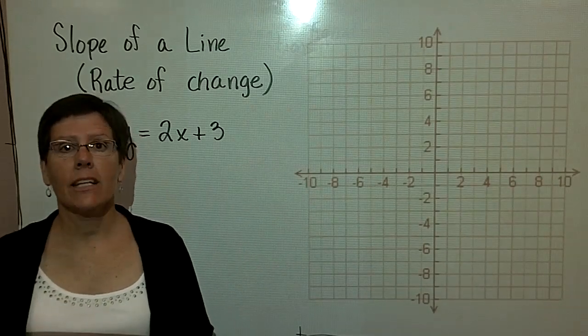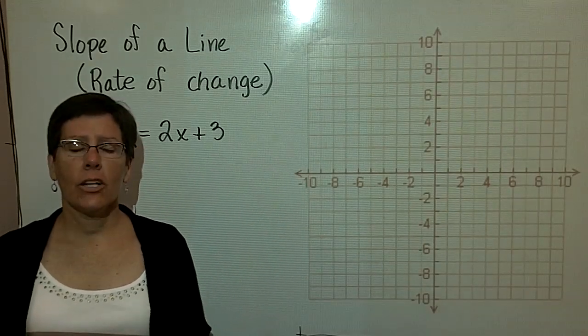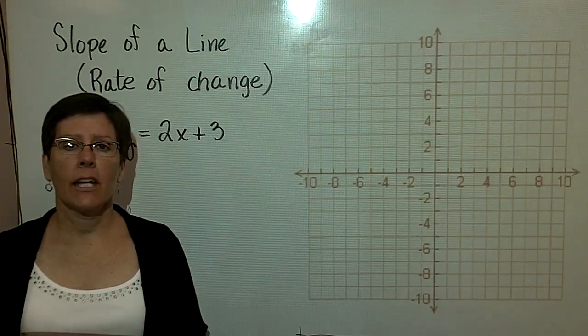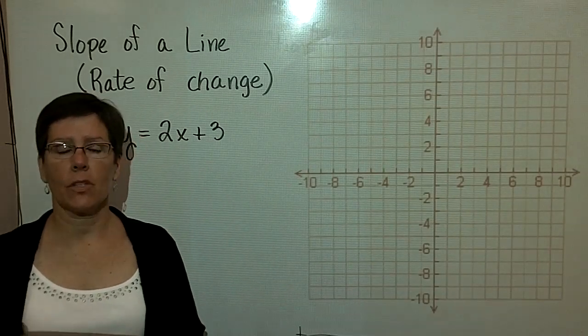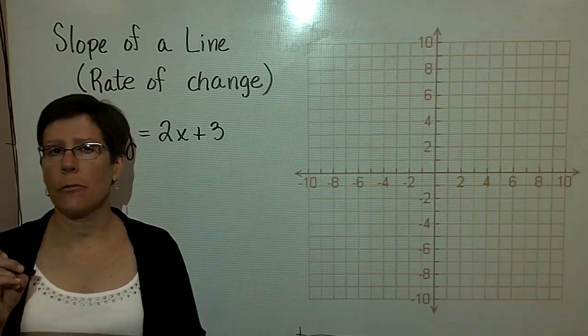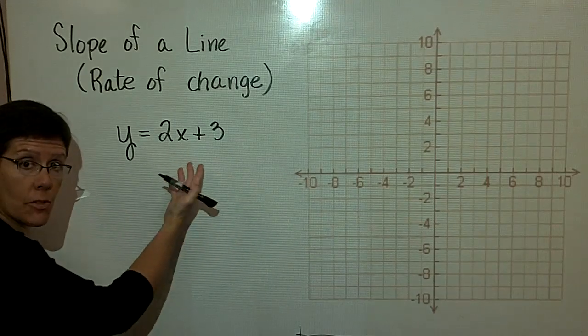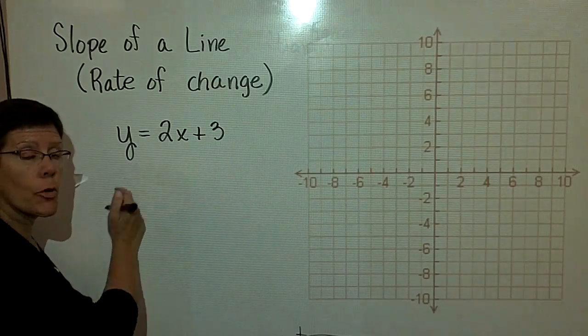I'd like to now find the slope of a line given an equation. In order to do that, I'd like to demonstrate it graphically at first. And then I'd like to talk about the form that this equation is in and identify the slope very readily because it's in what's called slope-intercept form.